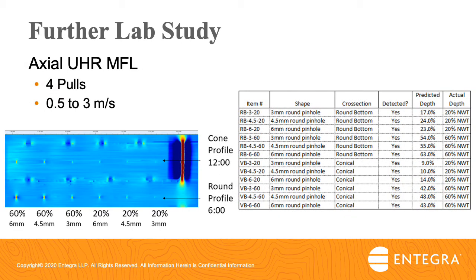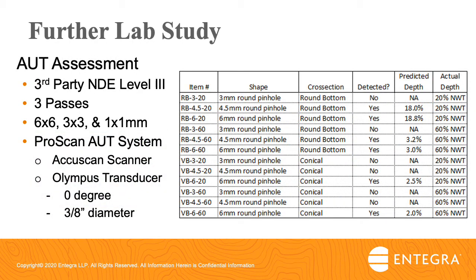The ultra-high resolution axial MFL tool was pulled 4 times at speeds ranging from half a meter per second to 3 meters per second. The MFL system detected 12 out of 12 defects. 11 of 12 defects were found to be within sizing tolerance. As expected, the conical-shaped pinholes were undersized. The automated UT system made 3 passes of the test section. Only 6 of the 12 defects were detected, and only the larger, shallower defects were accurately sized. AUT was challenged by the lack of remaining wall thickness in the deepest pits and by the conical shape.